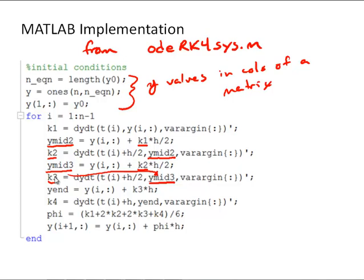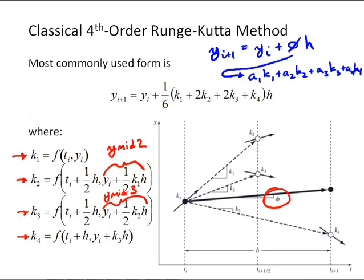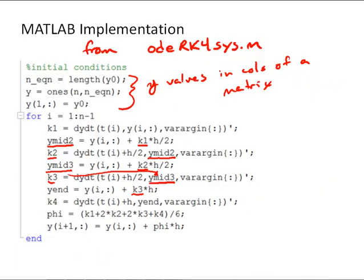And lastly, we'll use k3 to calculate y-end, and y-end would be the y value that we're going to use for the last function evaluation, k4. We'll use y-end to calculate k4, and then lastly, calculating our increment function phi as a weighted average of those 4k values, and then using phi in our general one-step method equation to calculate all of our y values for the i plus 1 time step.